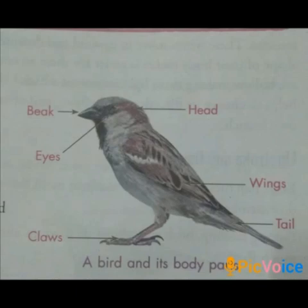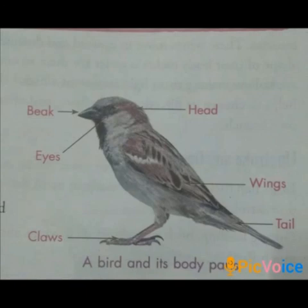The wings of a bird help it to fly. The beak helps the bird to eat and carry materials such as grass, twigs, and dry mud for its nest. The wings of the bird are covered with feathers. The feathers on its body help it to fly and maintain its body temperature. The tail helps to change its direction. The claws of the bird help it to sit on branches and catch prey.